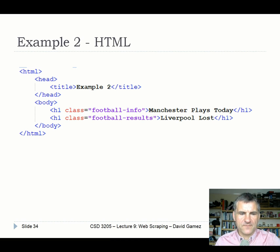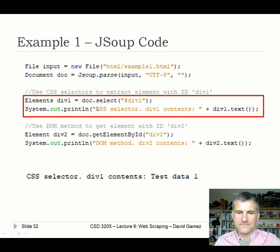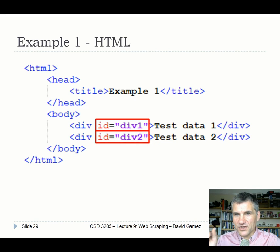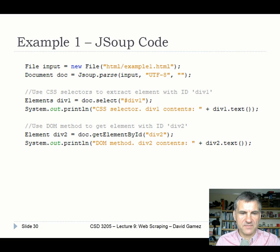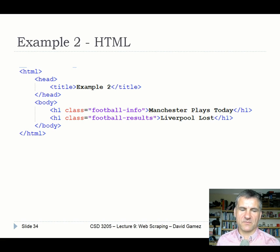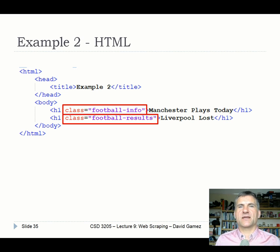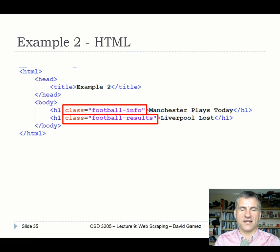The problem with using classes is you've got to figure out which one to use. There may be a unique class that picks out the data you need, or it may be used in several parts of the page. Therefore, you've got to do more processing to pick out the element with that class within the right context. I'll show you how to pull out by class, but also how to select by element names. Running 'doc.select("h1.football-info")' returns all h1 tags styled with the class 'football-info', giving us 'Manchester place today' - which is correct.